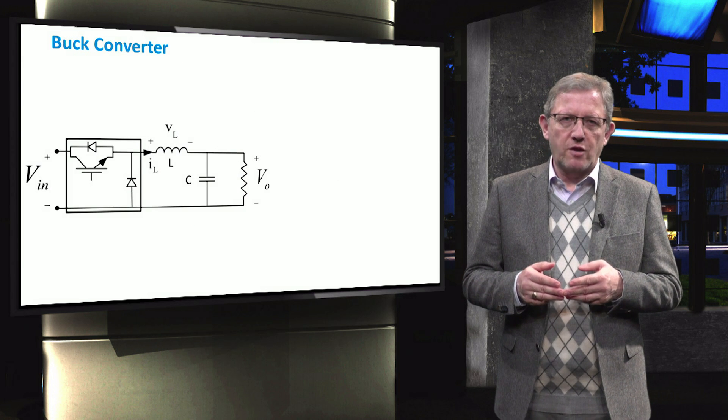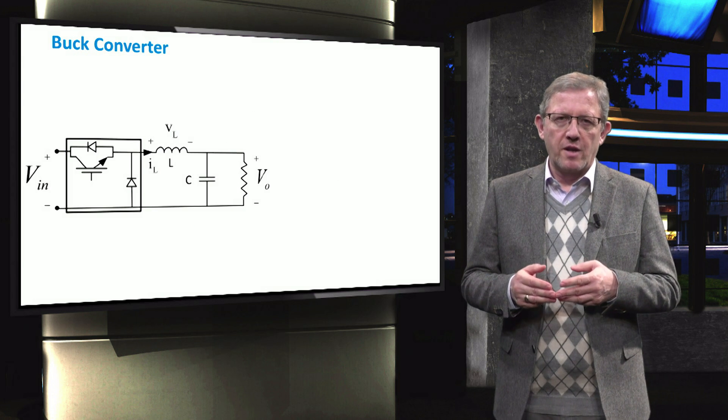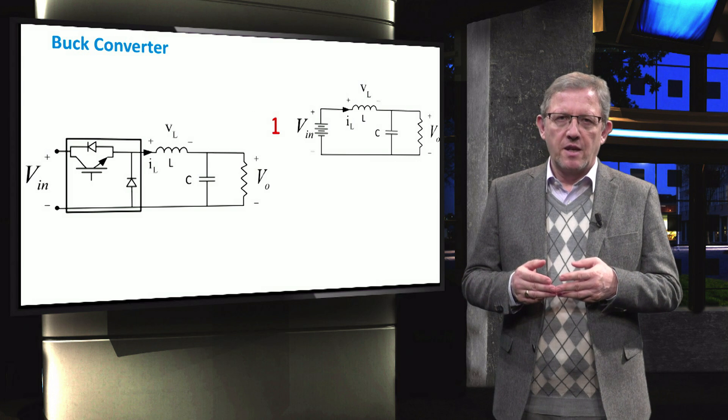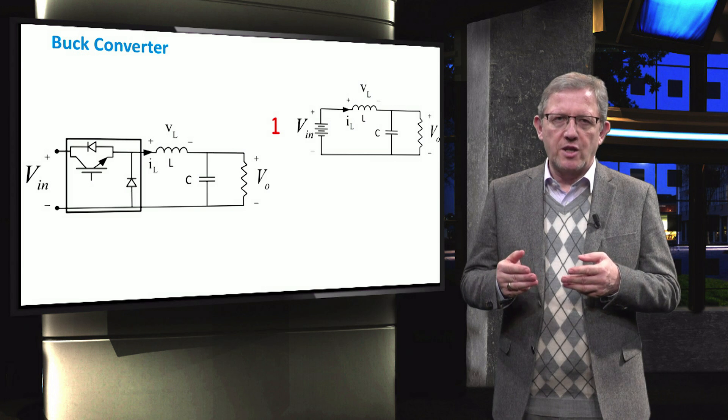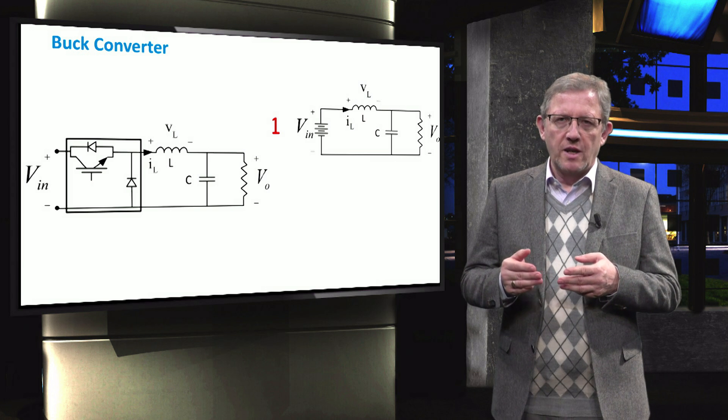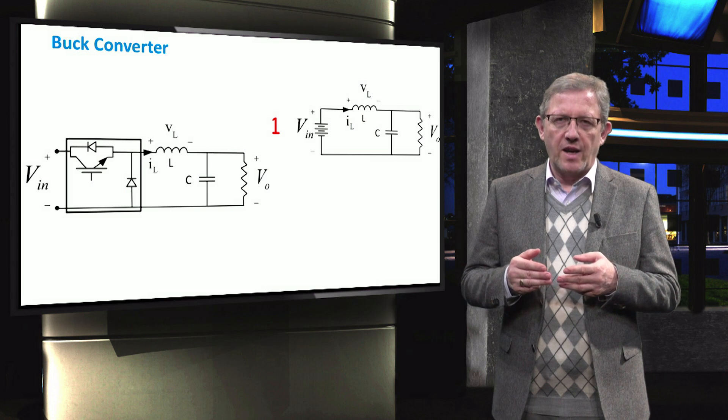We can consider two states of operation for the buck converter. In the first operating state, the input source is connected to the output where it stores some energy in the inductor. Note that the voltage of the inductor, V_L, is positive since the input voltage is larger than the output voltage.